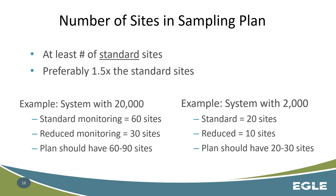I've got two examples here: a system that serves 20,000 people and a system that serves 2,000 people. For the 20,000-person system, standard monitoring is 60 sites. If you're currently sampling 30 sites, you're more than likely on a reduced schedule, but your standard is 60, and your sampling plan should include 60 sites — we recommend between 60 and 90 to have that buffer. For a 2,000-person system, you're likely sampling 10 sites, your standard monitoring is 20 sites, and your plan should include 20 to 30 sites.